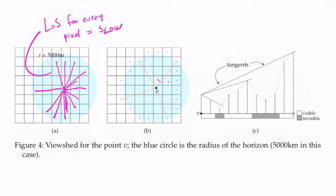The idea is to start at V, rasterize the line, project all centers, and walk along the line. You keep a running tangent — the angle to the highest point seen so far. If a point is below the tangent it's not visible; if it's above, it is visible. The tangent is updated as you walk based on local elevation. So the algorithm simply starts at V, walks along each center, keeps the tangent up to date, and decides for every pixel whether it is visible or not.